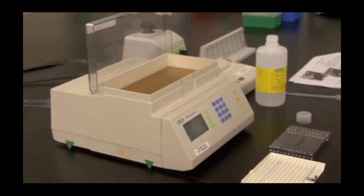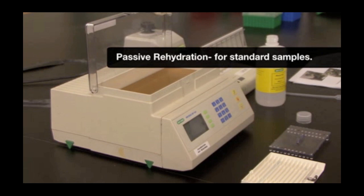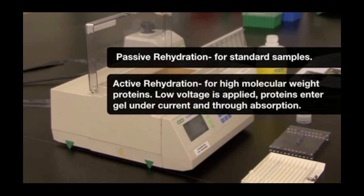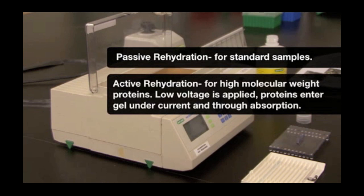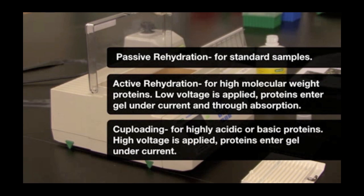The initial step of the first dimension separation is to rehydrate the strip. I will do passive rehydration in the focusing tray. Other forms of rehydration are active, which may be used for high molecular weight proteins, and cup loading, which is ideal for the separation of proteins that will be separated at extreme basic and acidic pH.